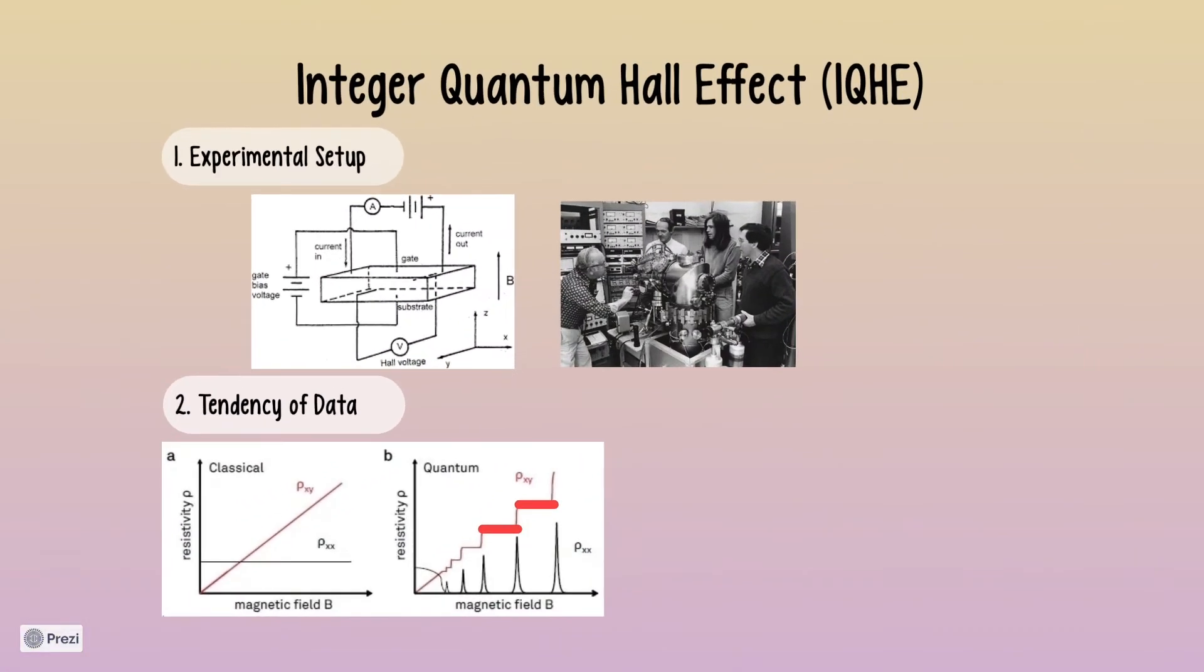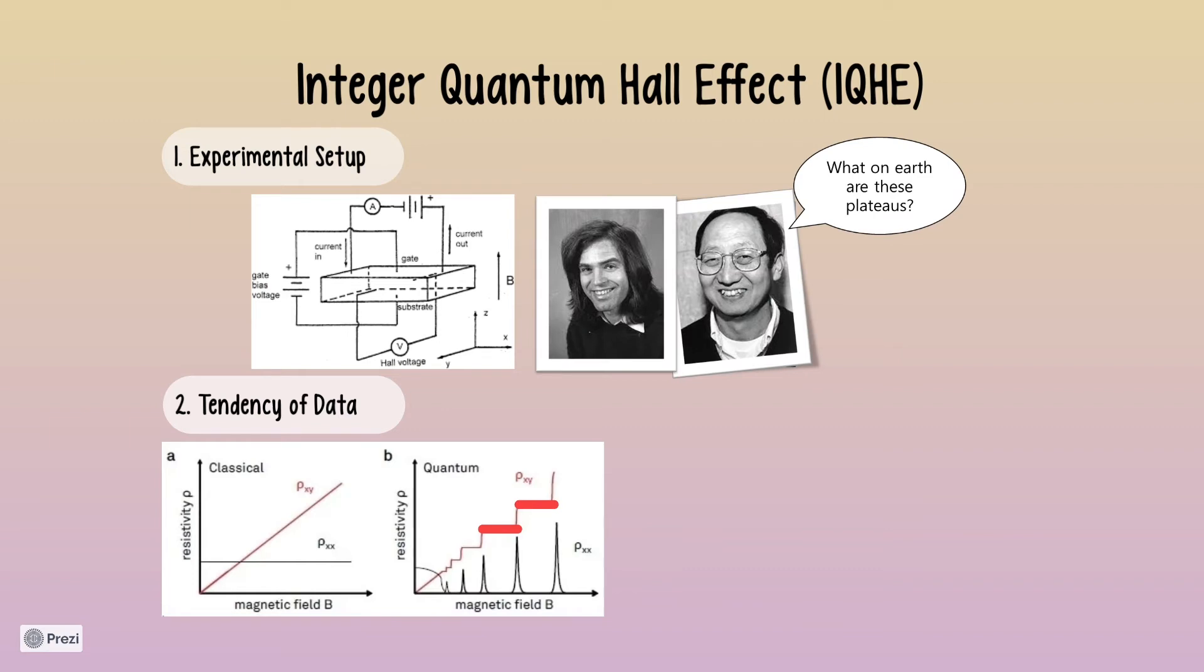In 2007, Horst Stormer and Daniel Tsui found that, at low temperature and high magnetic field, the Hall resistance in graphene did not vary linearly with the magnetic field, as predicted by the classical Hall effect. Actually, the plot of the resistivity exhibited many plateaus. This phenomenon indicated that the Hall resistance is quantized in units of Planck constant over square of charge of electron. It turns out that the plateaus corresponded to the cases where the filling factor has an integer value, referred as the integer quantum Hall effect.